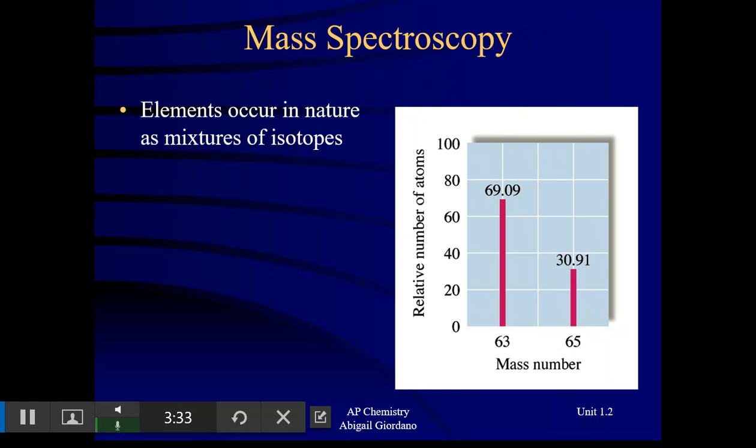What you're seeing here is whatever this element is has two naturally occurring isotopes. Let's review that term, isotope. Isotopes are two atoms that have the same number of protons, that means they're the same element, but different number of neutrons. So I can see from this graph that this particular element has two naturally occurring isotopes. They have the same number of protons, but different number of neutrons.